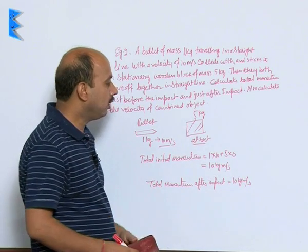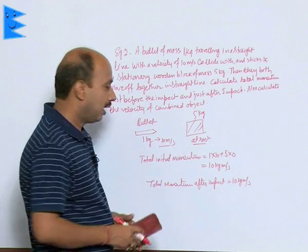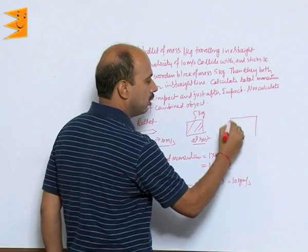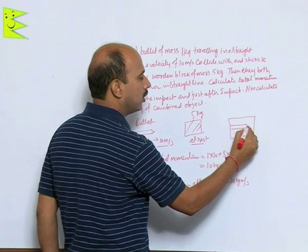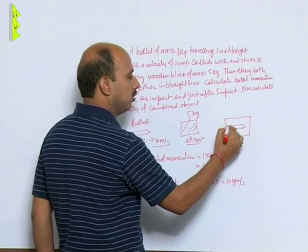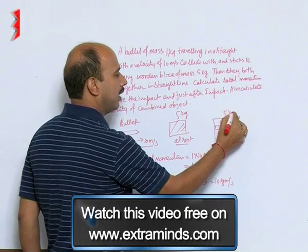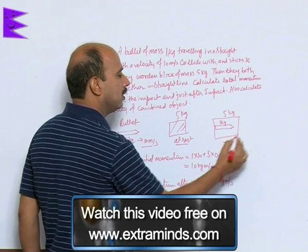So now we have to calculate velocity as this bullet enters into this block. So this block and bullet now move together. See here, its mass is 1 kg, its mass is 5 kg, now they are moving with the velocity v.